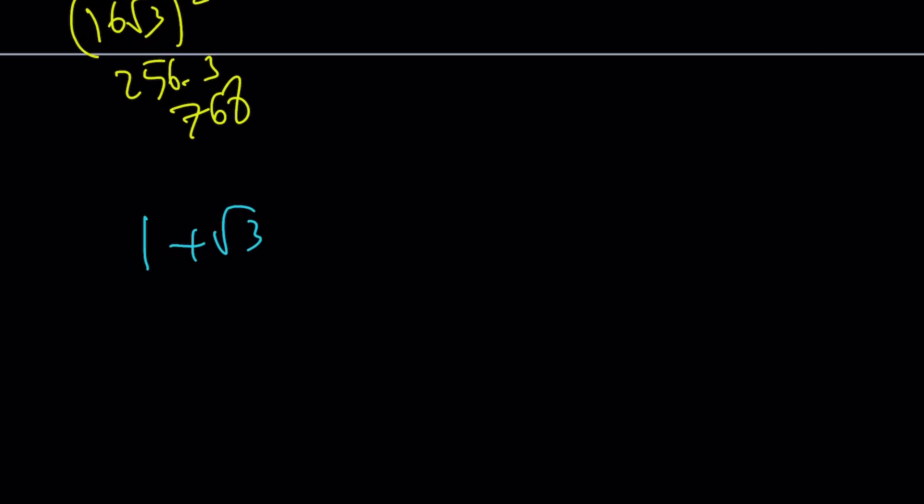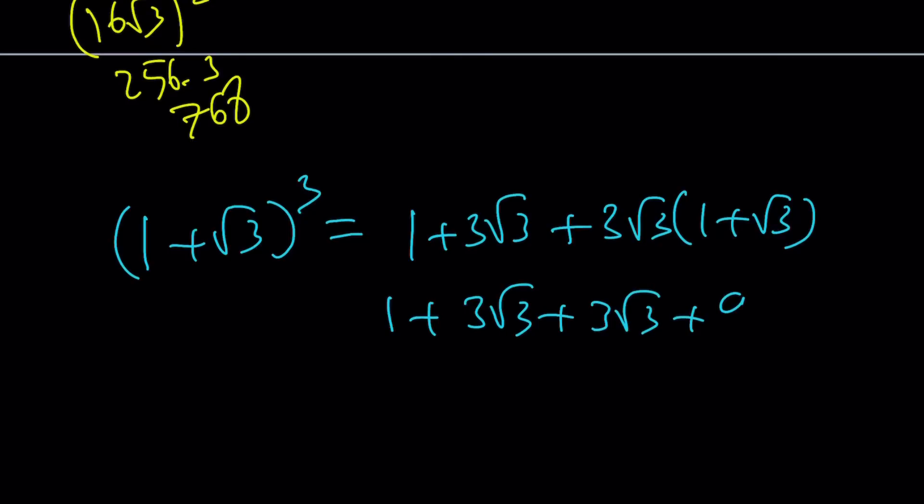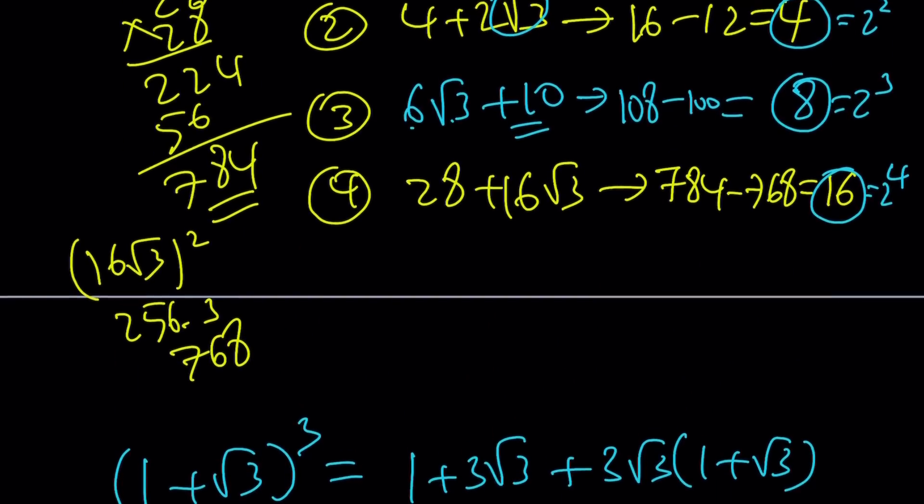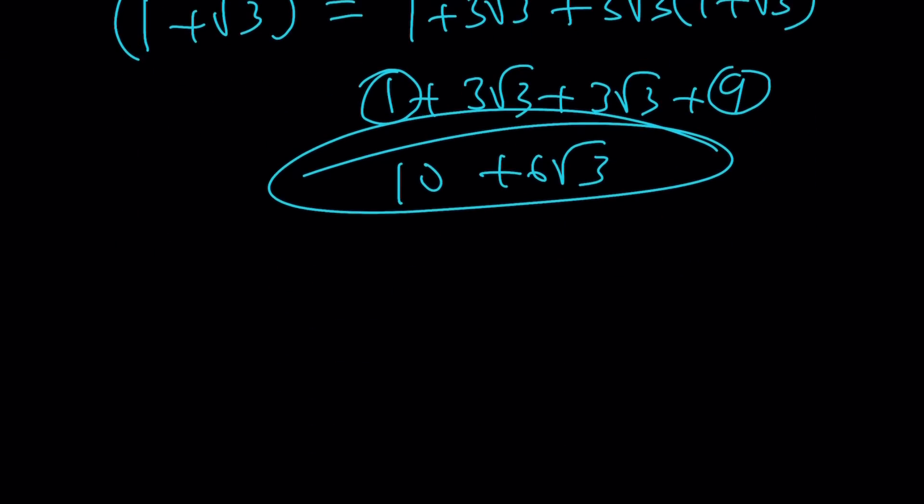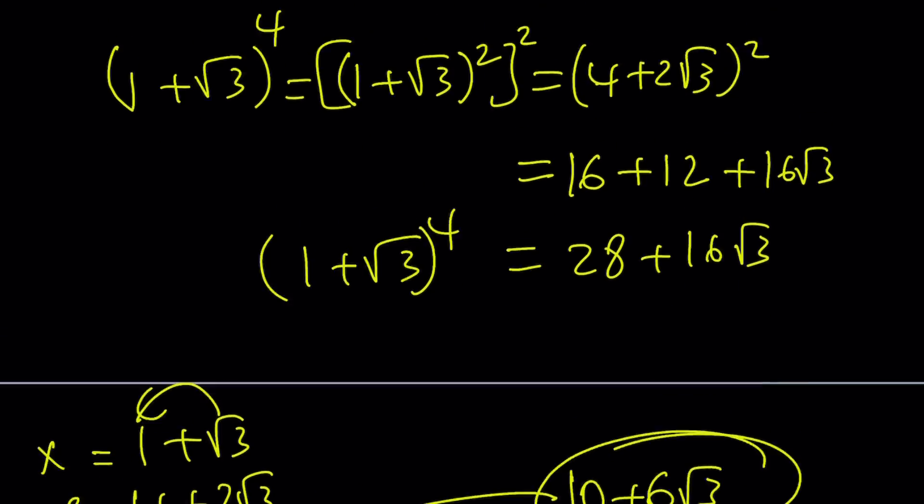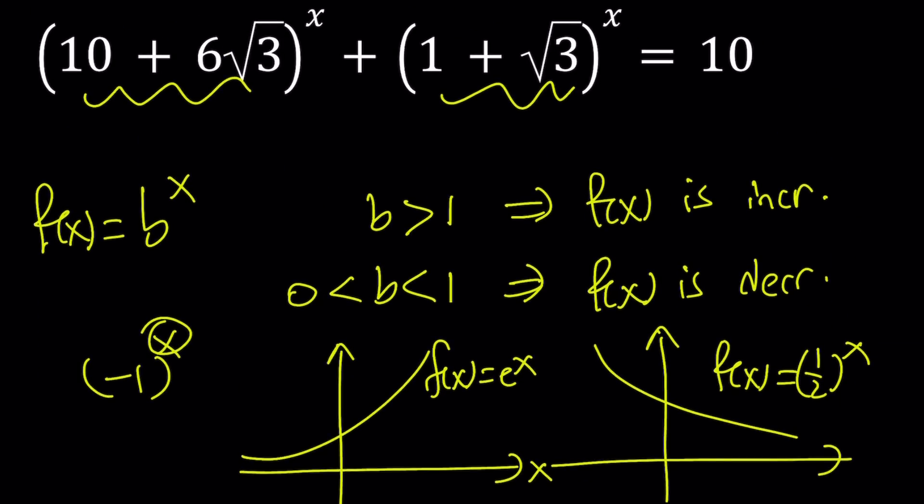Let's go ahead and check it out. Cube 1 plus root 3. You're going to get 1 cubed plus 3 root 3 cubed plus 3 root 3 multiplied by 1 plus root 3. This is 1 plus 3 root 3 plus 3 root 3 plus 9. That's 10 plus 6 root 3. Yay, we got the answer. All of this work to figure out that this is the number we're looking for. So I'm going to go back to the original number and just work off of that.